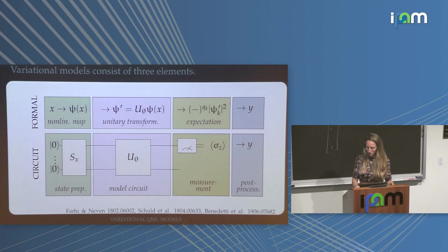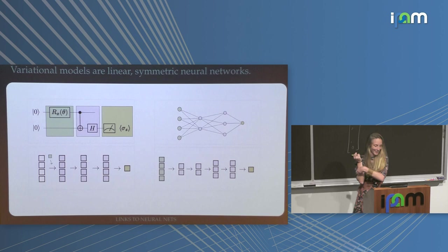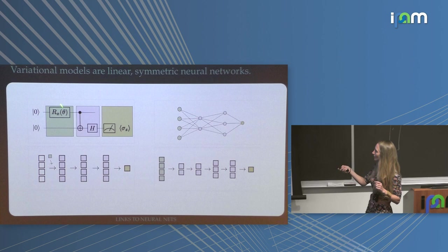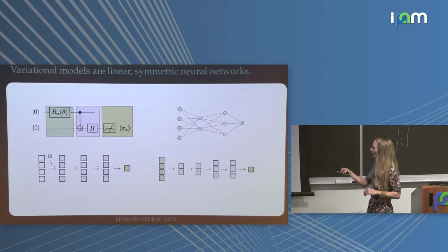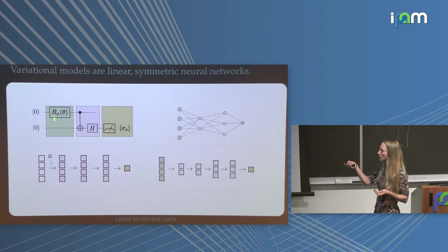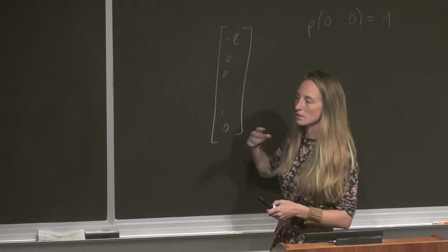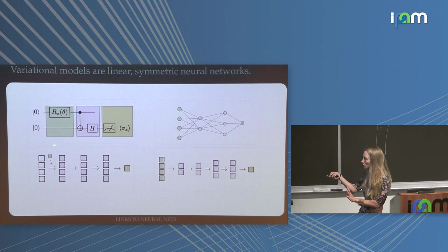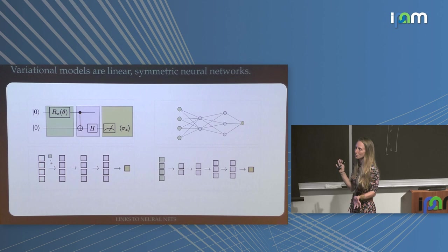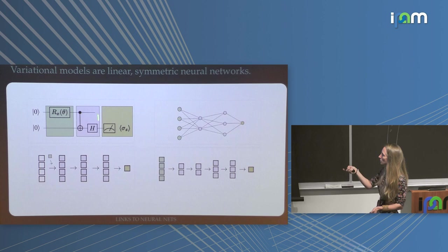Now you can say these variational models — discarding the state preparation for a moment — are in a sense a linear symmetric neural network. Linear is clear because every gate is literally just a linear transformation on your amplitude vector. Every gate stays in the same dimension; you could do tricks of removing and adding qubits to make it more interesting, but in a sense this will always be a structure, and measuring gives you a scalar. A neural network changes dimensions in every transformation — here you do a linear transformation then a non-linear one in the same dimension, so there's a bit of a difference.